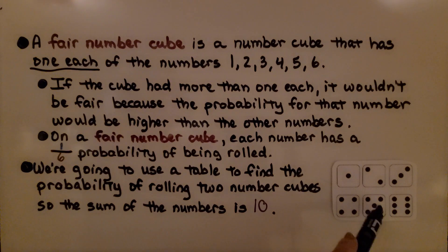What if there were two sixes instead of the 5? Now there's two sixes and a 1, 2, 3, 4. We'd have a greater chance of rolling a 6 because now there's two of them. That wouldn't be fair. A fair number cube has one of each number.